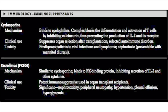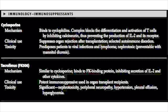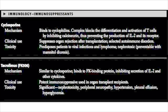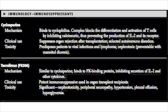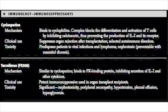The next calcineurin inhibitor is tacrolimus. Tacrolimus is similar to cyclosporine in that it is a calcineurin inhibitor, but it works a little differently. It works by binding to FK binding protein, and this complex — FK binding protein plus tacrolimus — inhibits calcineurin. As before, inhibition of calcineurin causes inhibition of IL-2 production. This makes it a potent immunosuppressant for patients who have undergone organ transplant. Major toxicity, like cyclosporine, is nephrotoxicity; patients also develop peripheral neuropathy, hypertension, and hyperglycemia.